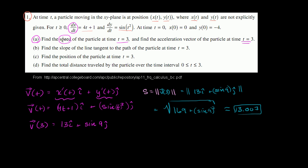So the speed of the particle at time t equals 3 is approximately 13.007. Then they want us to find the acceleration vector of the particle at time t equals 3.